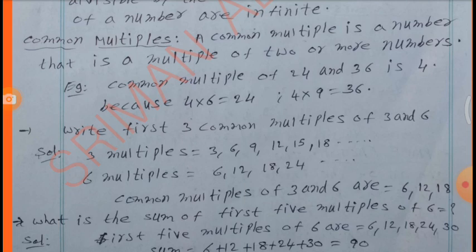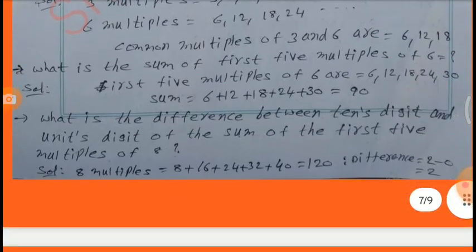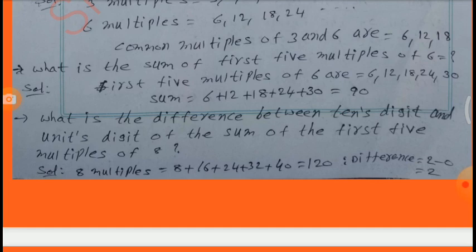What is the sum of the first five multiples of 6? The first five multiples of 6 are 6, 12, 18, 24, 30. Sum of multiples: 6 + 12 + 18 + 24 + 30 = 90.